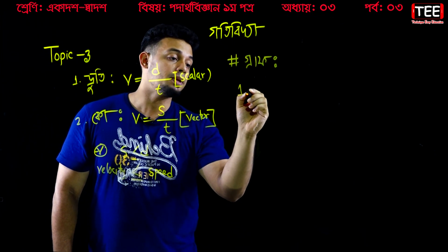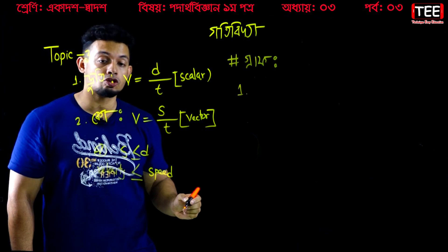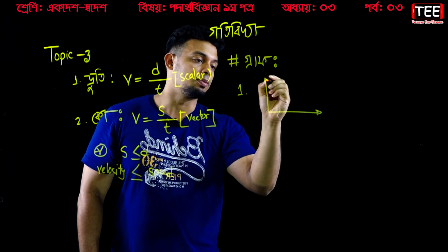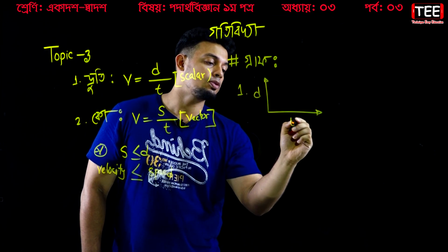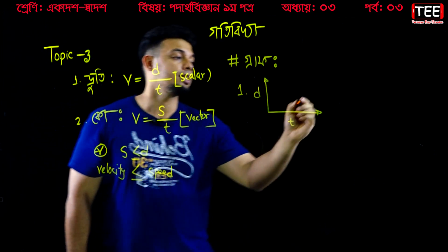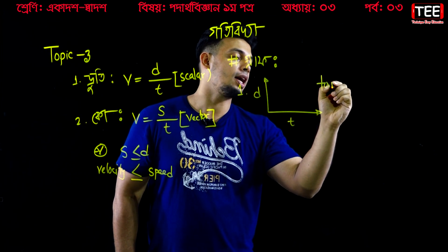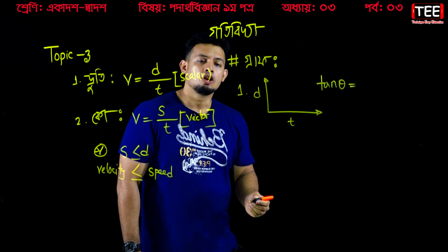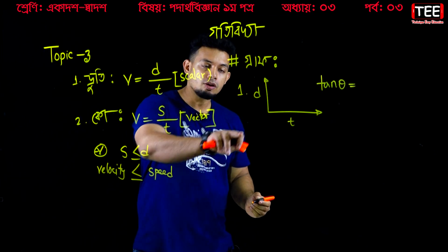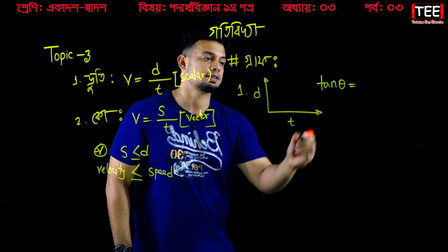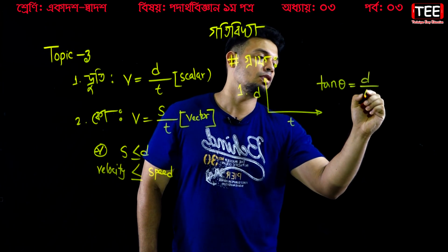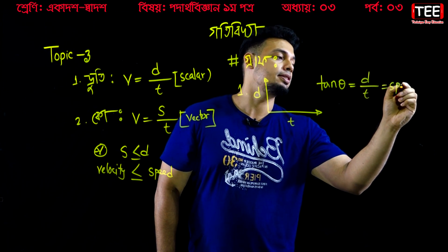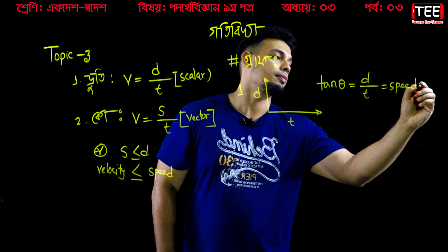The graph slope is the same thing. Graph slope is tangent. We take a small graph error — that is D, R, T — so this is the same as speed, or the same as V.